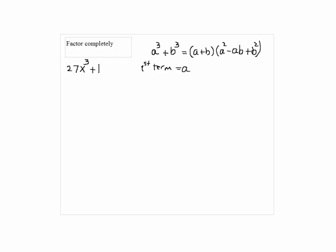Now this is the sum of cubes. A cubed plus B cubed is equal to A plus B times A squared minus AB plus B squared.